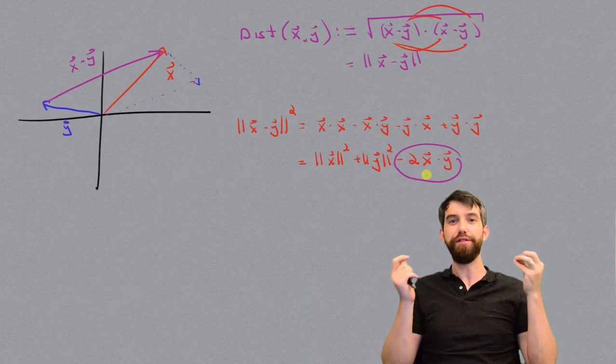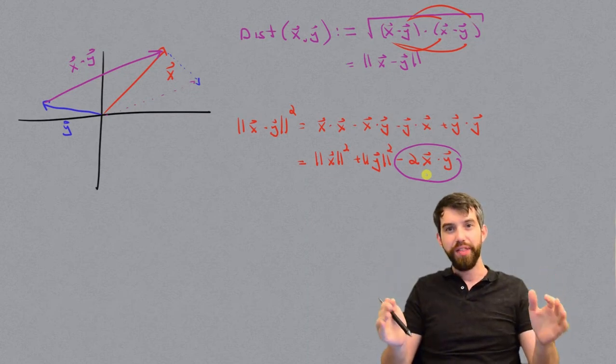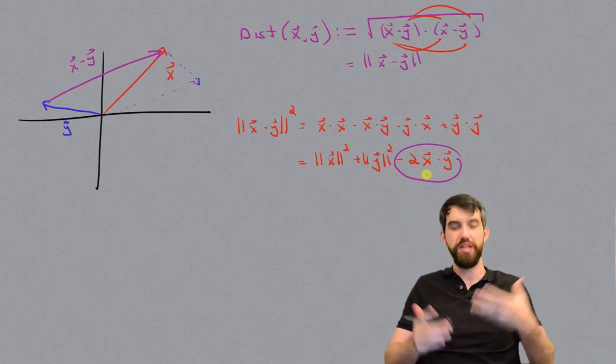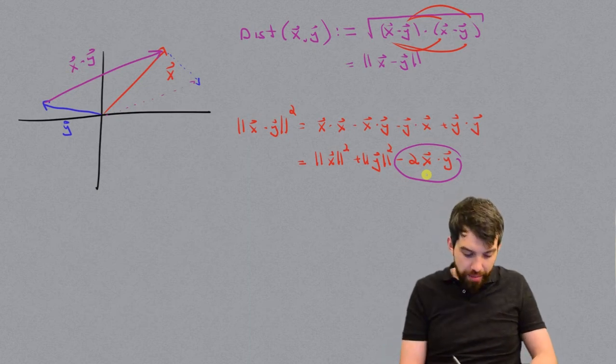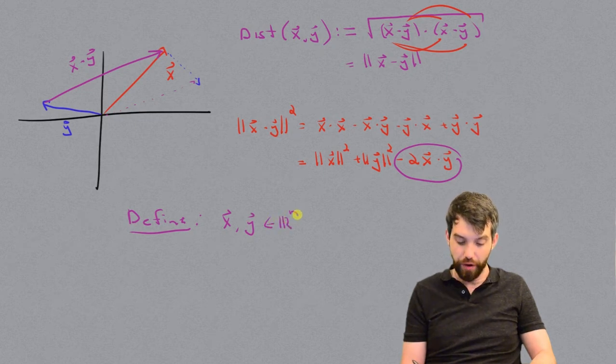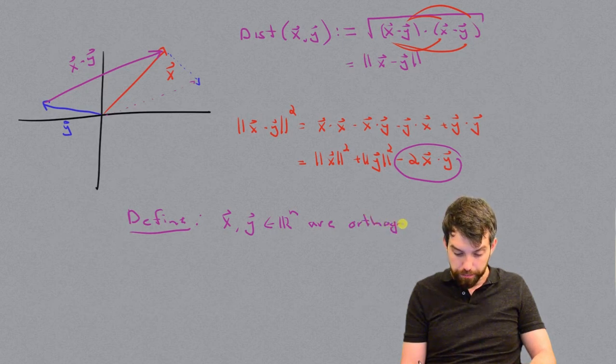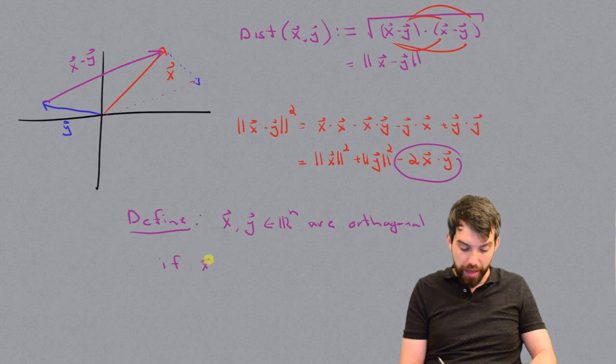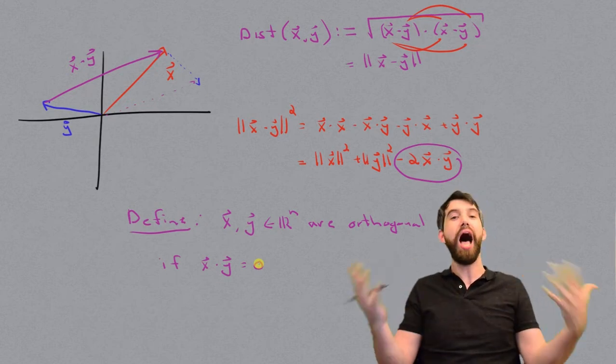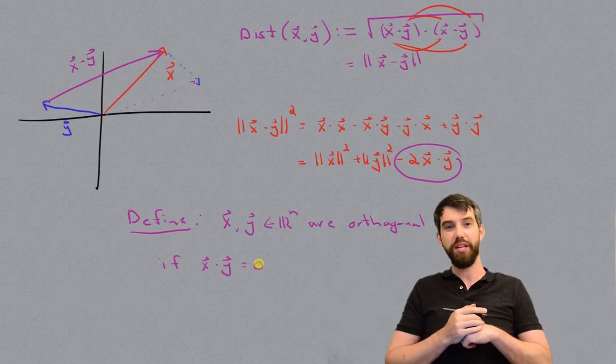So what I'm going to do is define a notion of orthogonality. The analog of having a right triangle is one where this dot product is going to be zero, and then you get Pythagorean theorem. So I'm going to define that my vector x and my vector y, which both live inside of R^n, that these are going to be orthogonal if we have that property that x dot y is equal to zero.